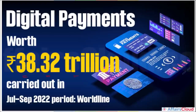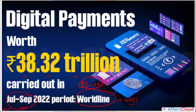On digital payments: 38.32 trillion rupees in digital payments were carried out in the third quarter of 2022, from July to September, as per data released by Worldline. Remember that Worldline and the National Payments Corporation of India partnered to launch UPI in Europe.